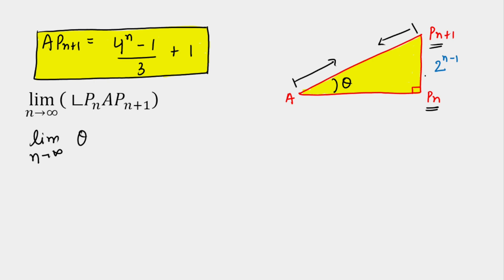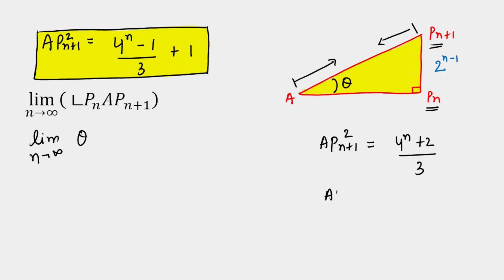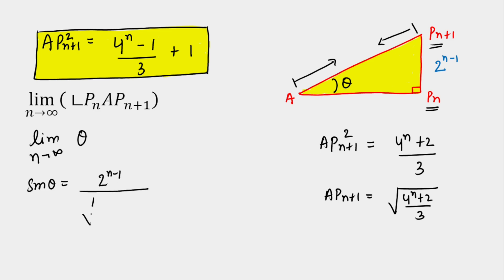To find theta, we use sine since we have the perpendicular and hypotenuse. The final expression for AP(n+1) is √(4^(n+2)/3). So sin(theta) = P(n)P(n+1) / AP(n+1) = 2^(n−1) / √(4^(n+2)/3).